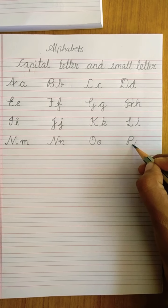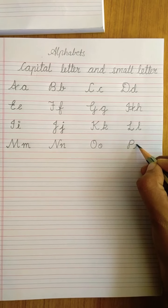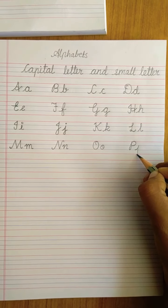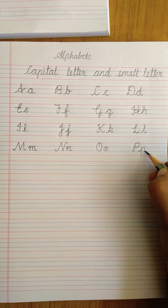Small letter P. Keep your pencil on the second blue line. Go up, touch to the first blue line, come down to the last red line. Again go up and from here you have to take a slight curve.